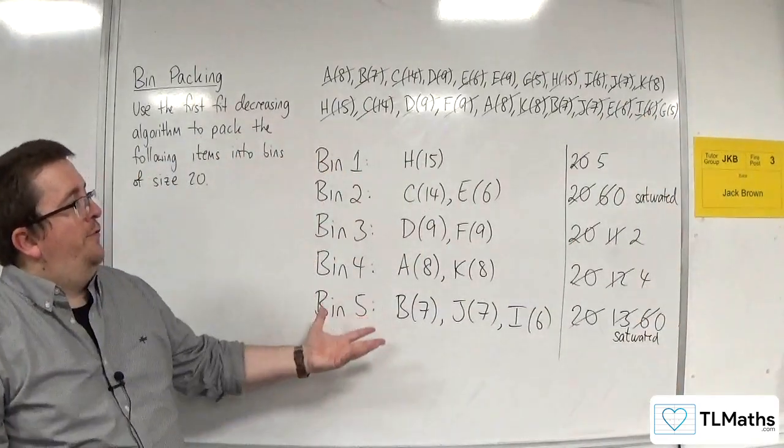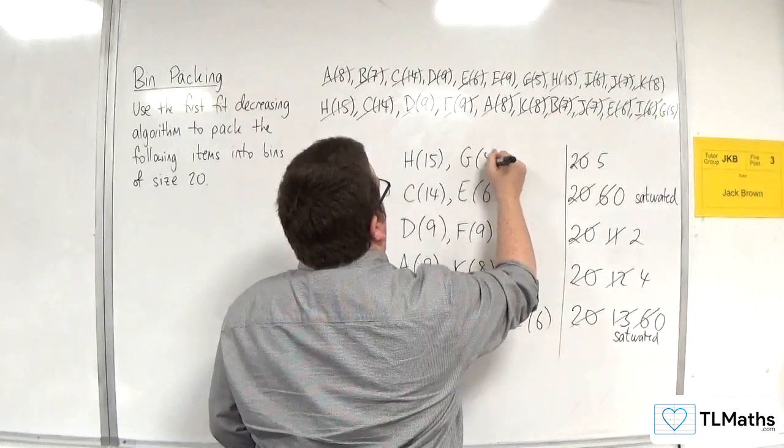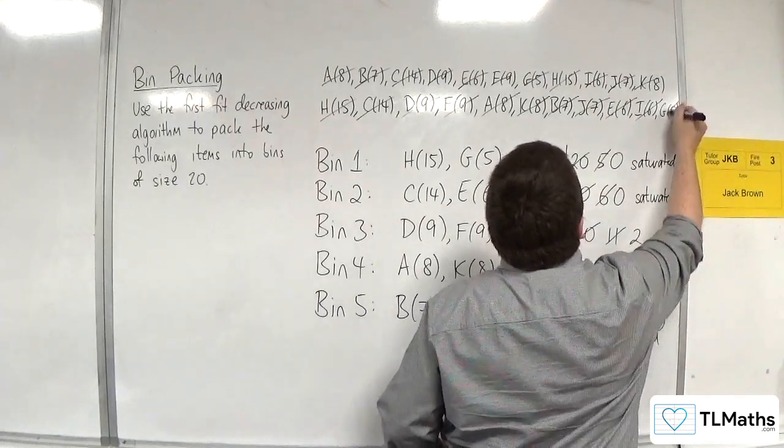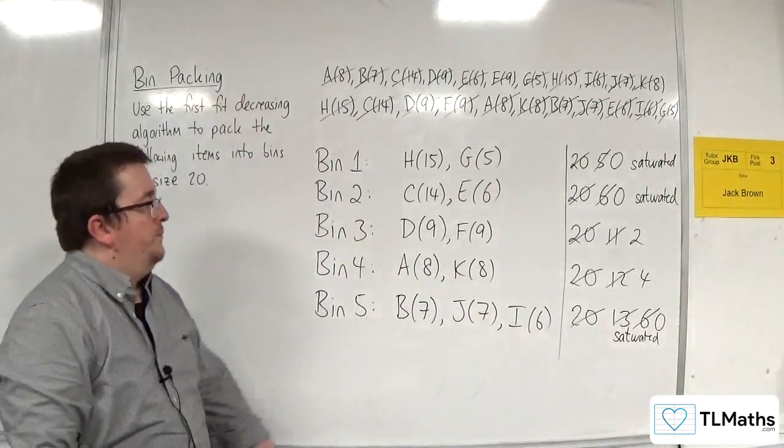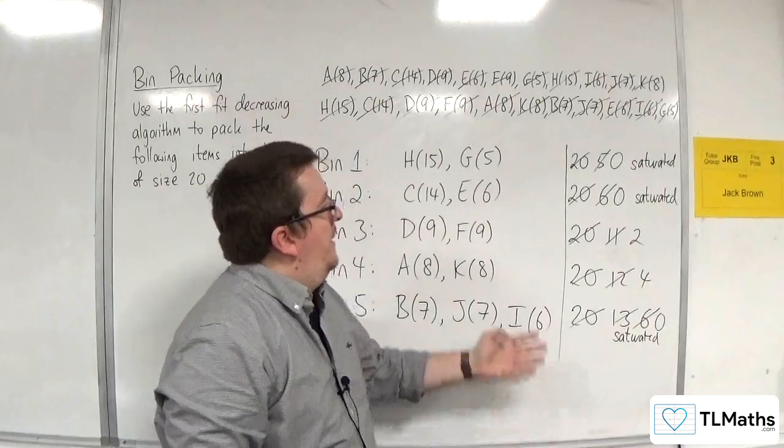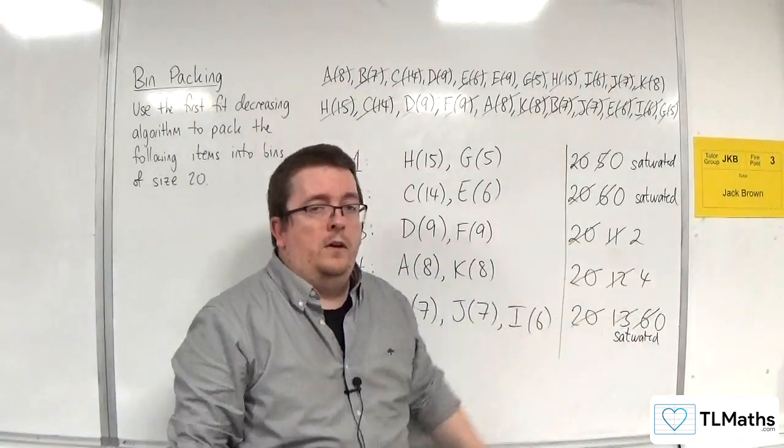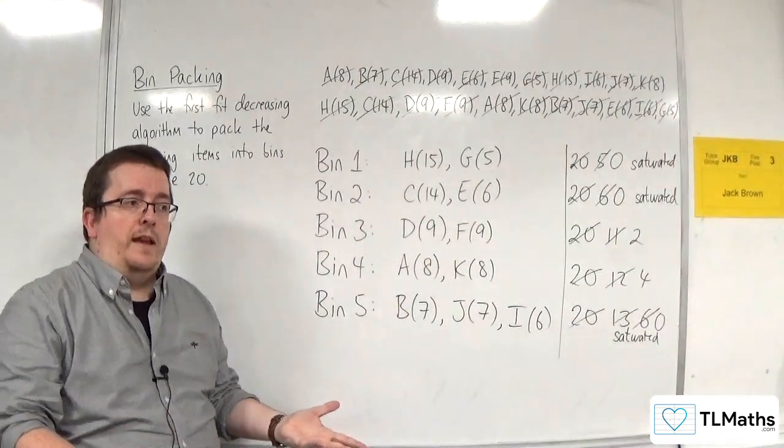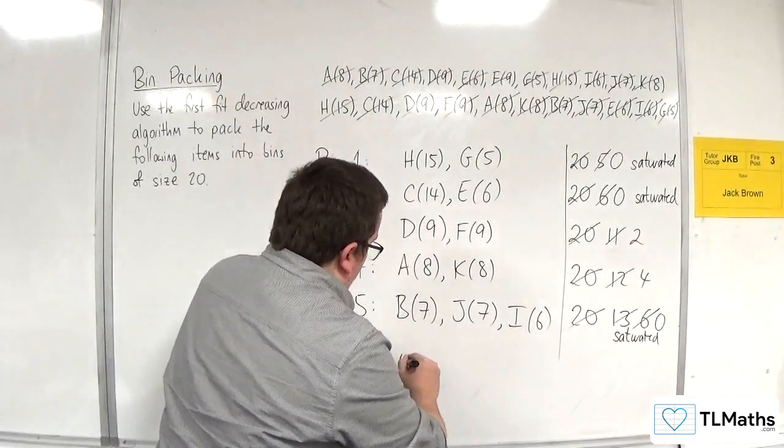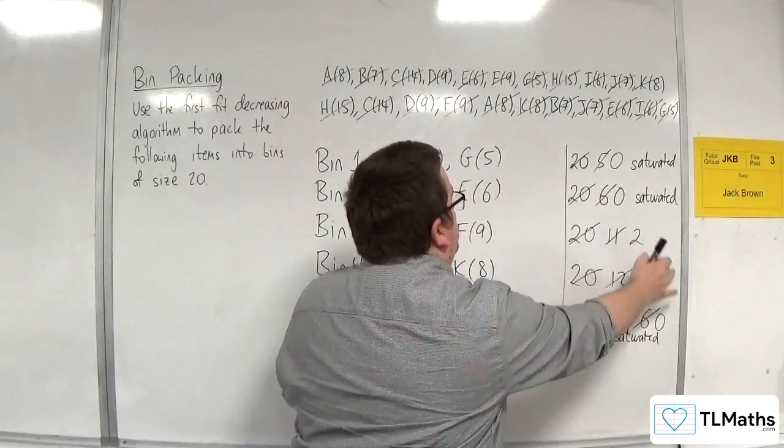And the last item is G5. That's the last item on my conveyor belt. And that can go straight into bin 1. So, that brings that down to 0. So, that bin is now saturated. Okay. And so, using the first fit decreasing algorithm, what I've found is that it's better than last time. Because this time, I've only got 6 empty space. Okay. So, 6 wasted space. So, total waste. In this case, is 6 units. Okay. The 2 and the 4 that's there.